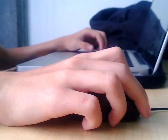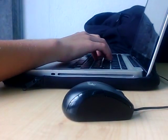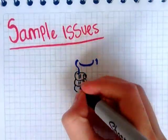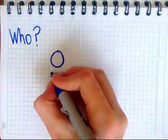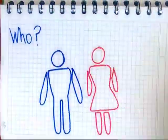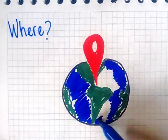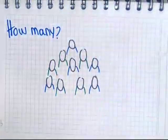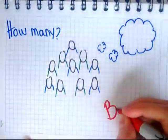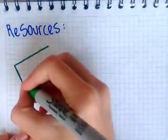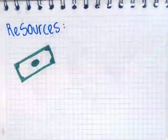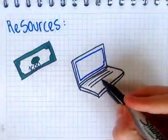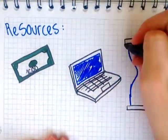You must also take sampling issues into account. The sample is the group of people you intend to ask. Who are they? Can you reach them? How many of them will you ask? Will the sample be biased? Finally, consider the needed resources: money, infrastructure, and time.